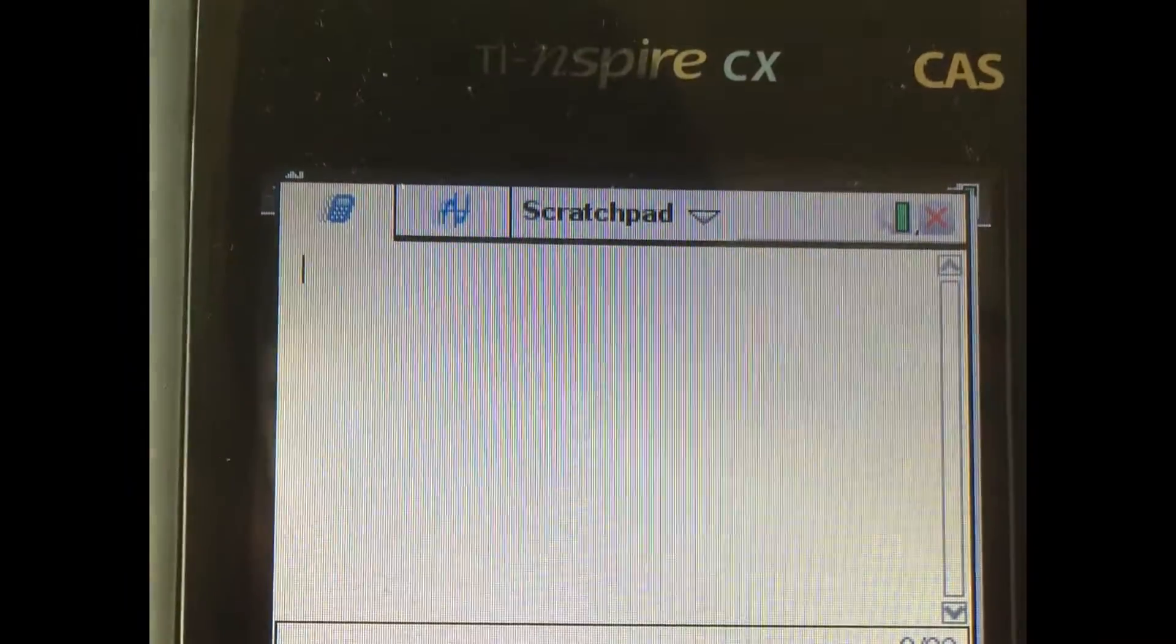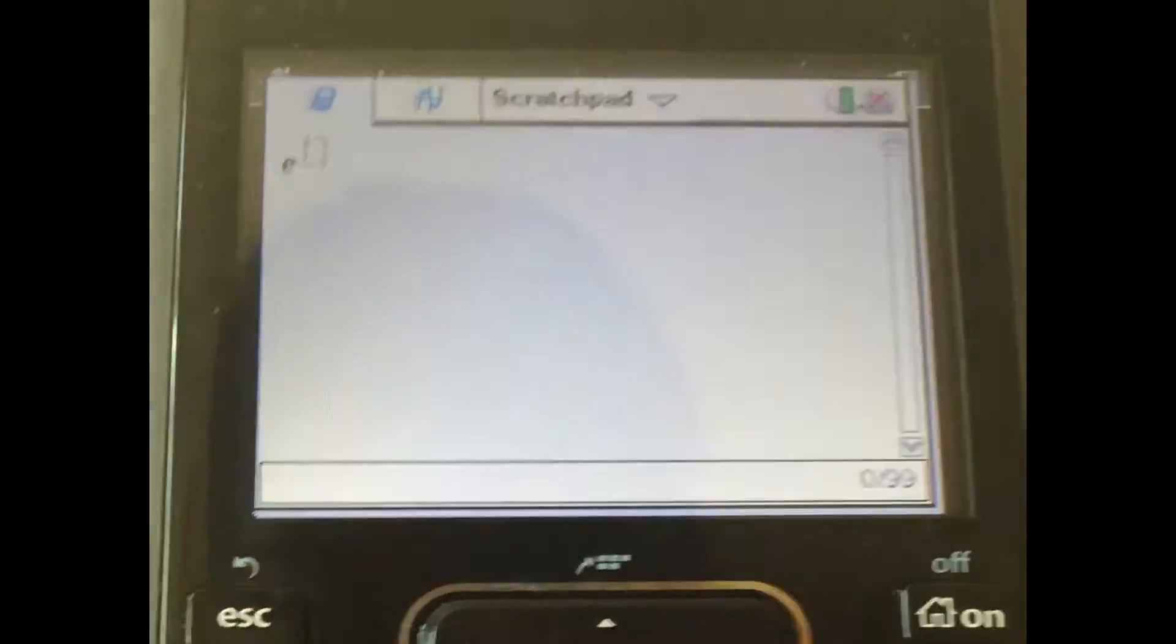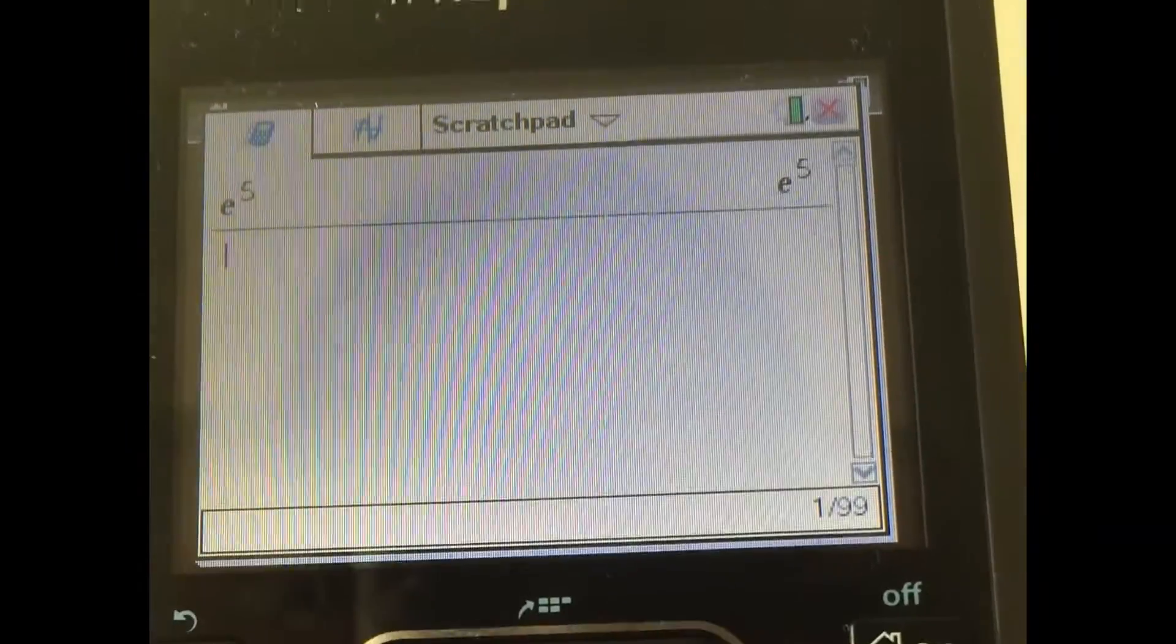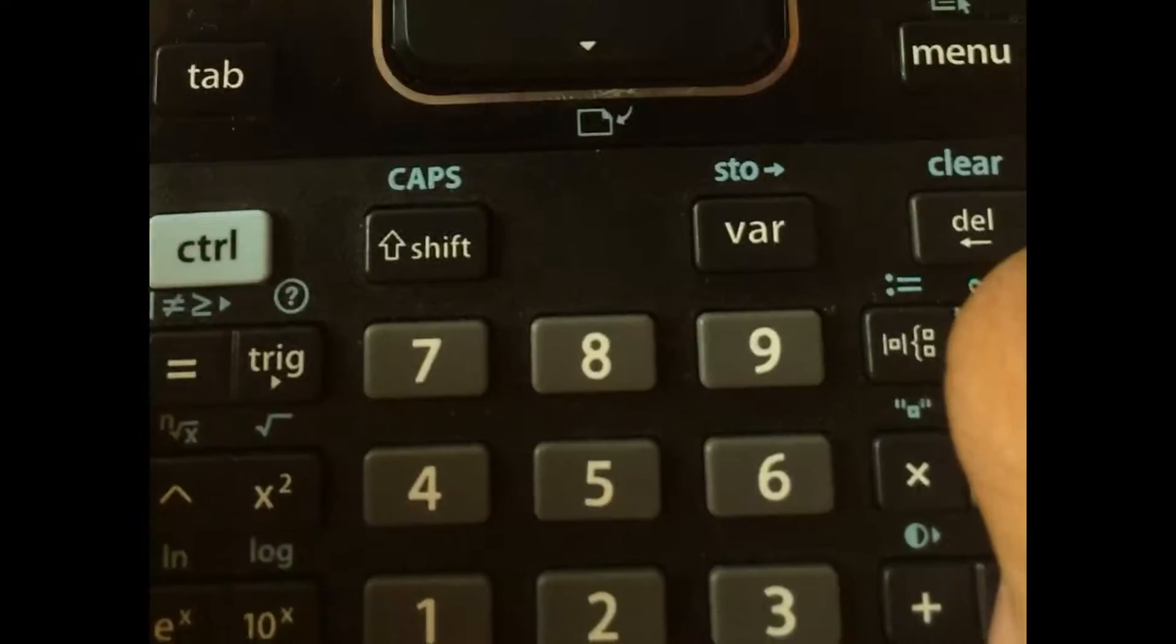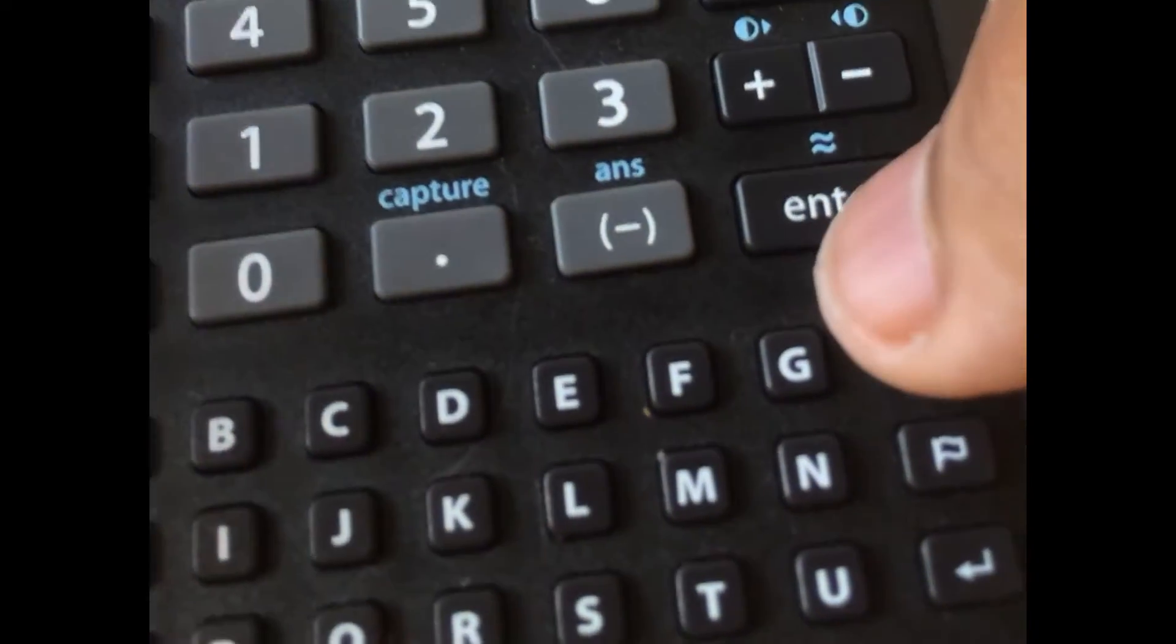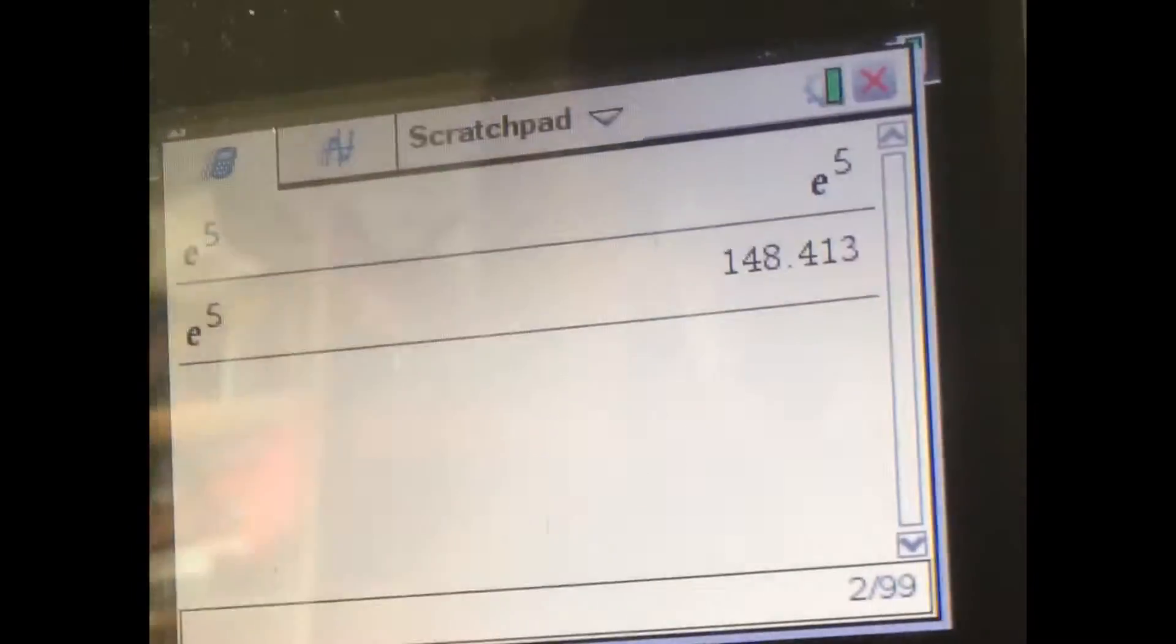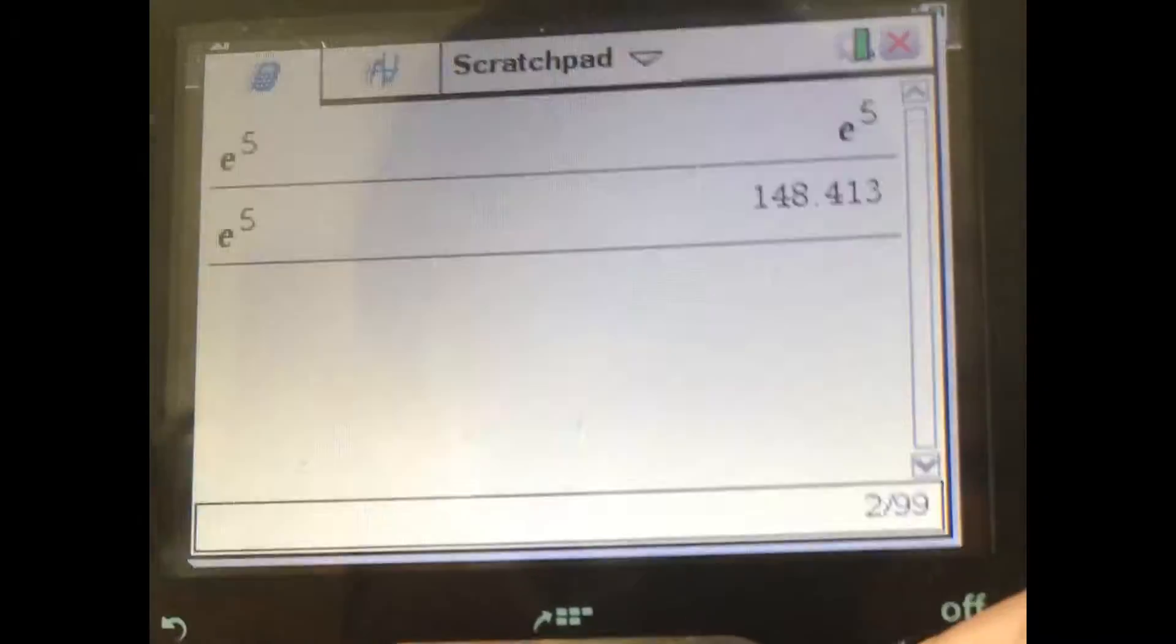One thing about the GC is that it only gives you exact values. So if, for example, the ln of something is e to the 5, it'll just give it to you as e to the 5. It doesn't want to lose accuracy by giving you the exact decimal points. But if you do want to get the decimal places, what you do is you press ctrl equals. So there's an approximate symbol here. So it gives you an approximate value, which is not exact, because it's only to 3 decimal places. But this is probably what you need to write in your math paper.